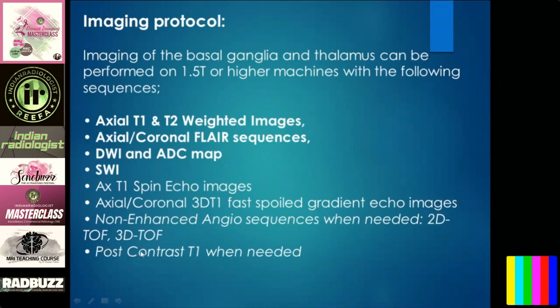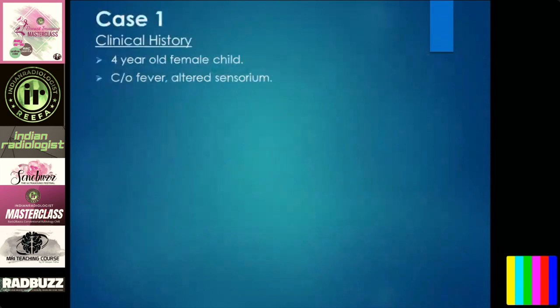Based on pathology and history, you can also do 3D TOF or 2D TOF and post-contrast when you are suspecting malignant inflammation. There are around 20 pathologies which commonly affect the basal ganglia and thalamus. We'll be discussing seven cases which are most common, and these are cases you will likely see in your practical exams where you need to answer correctly with a diagnosis.